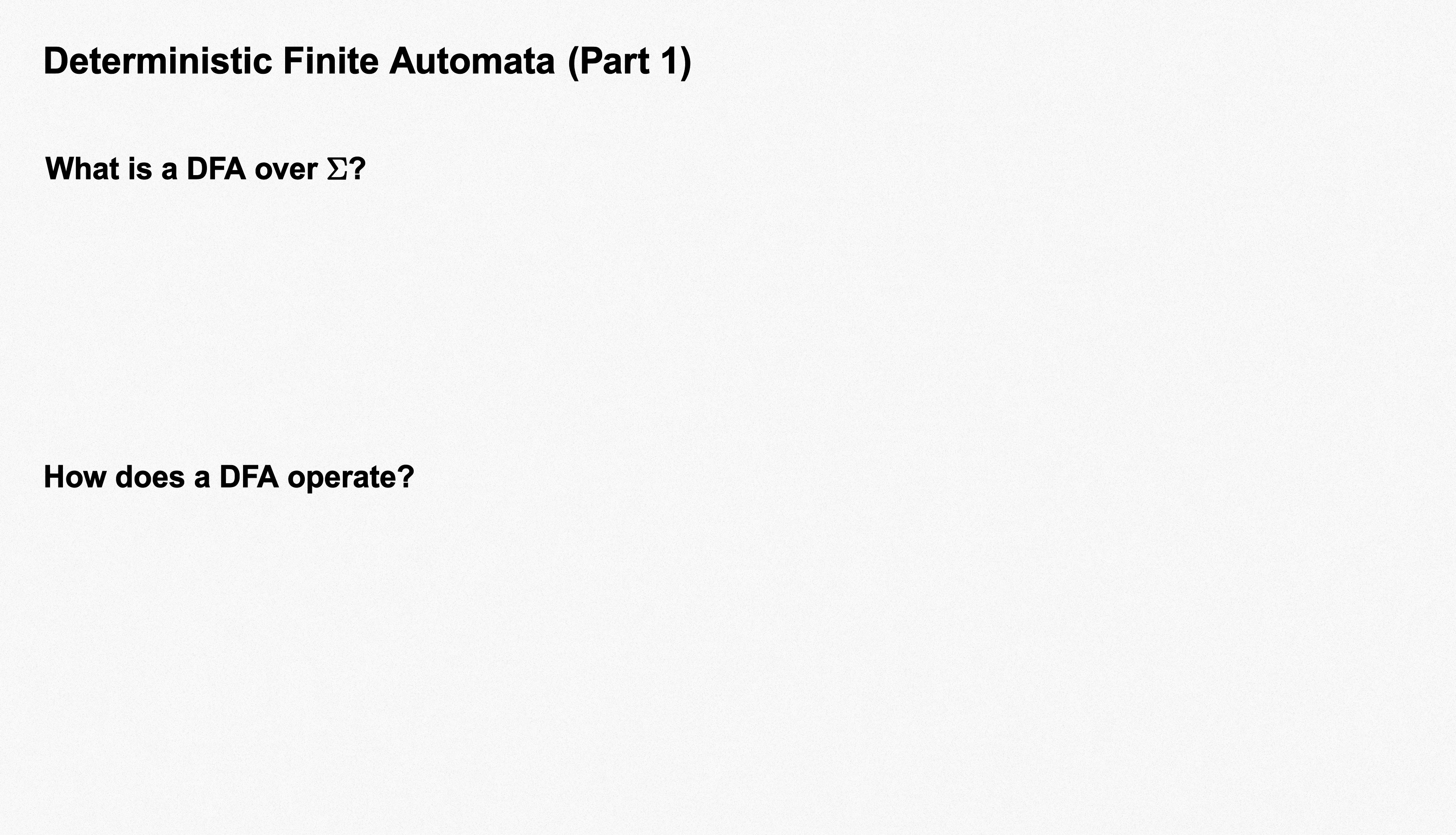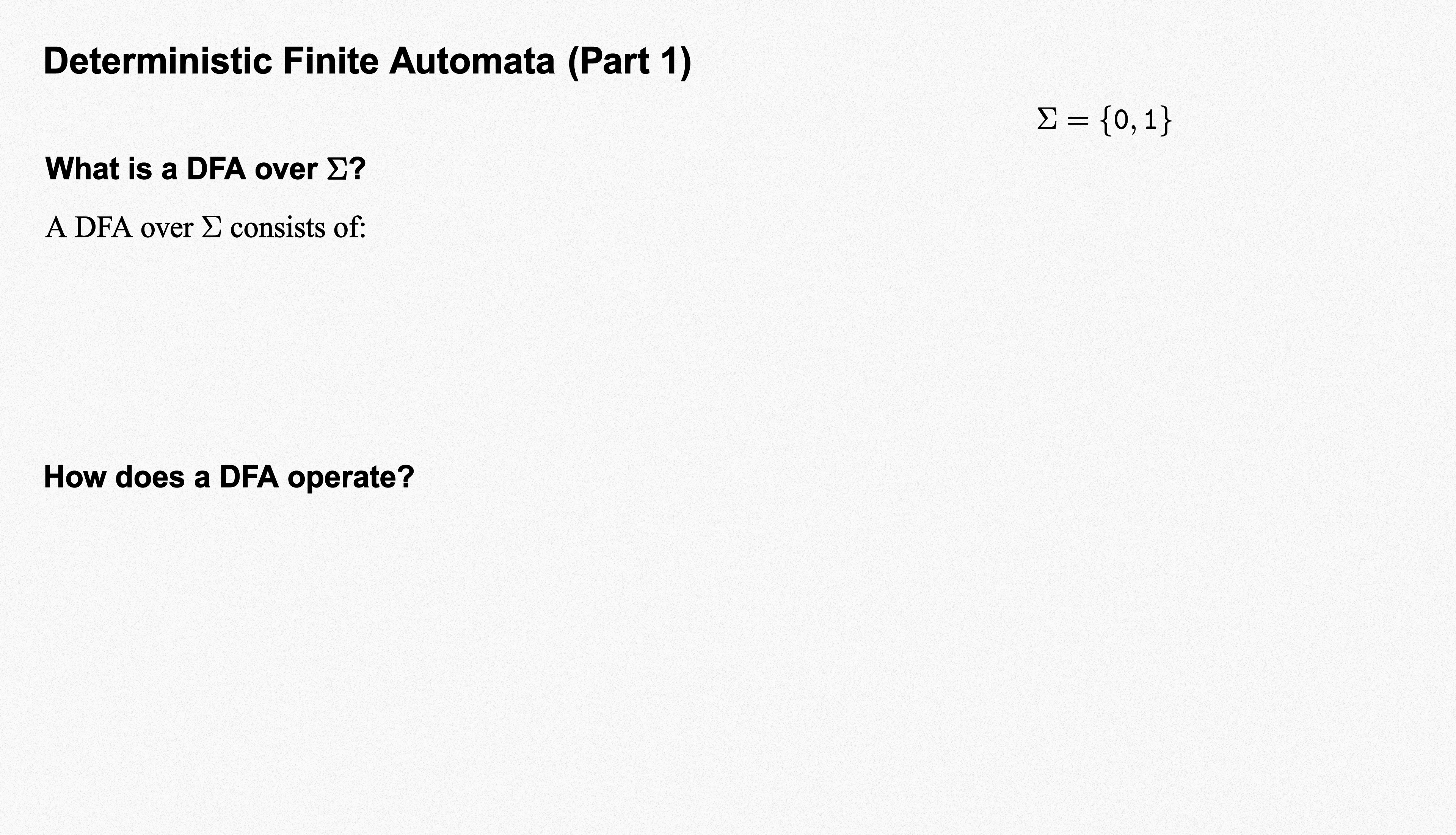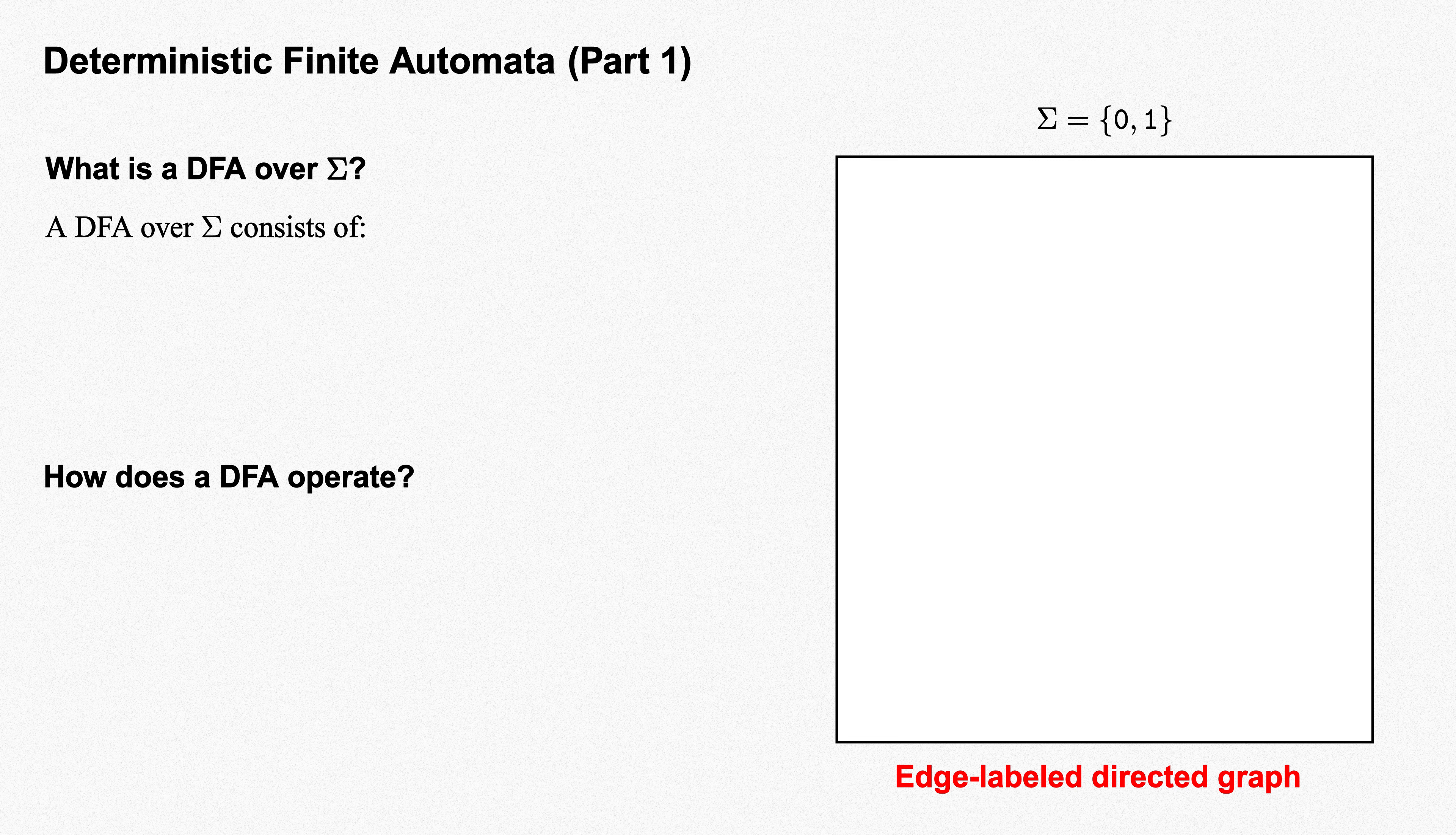In the rest of this video, we'll introduce all the basic elements of what a deterministic finite automaton is, and present the details of how it operates on each input string. So what are the details of what a DFA consists of? Suppose that our alphabet is sigma containing the symbols 0 and 1. We can represent a DFA by what is, in essence, an edge-labeled directed graph, with vertices and edges each playing a specific role.